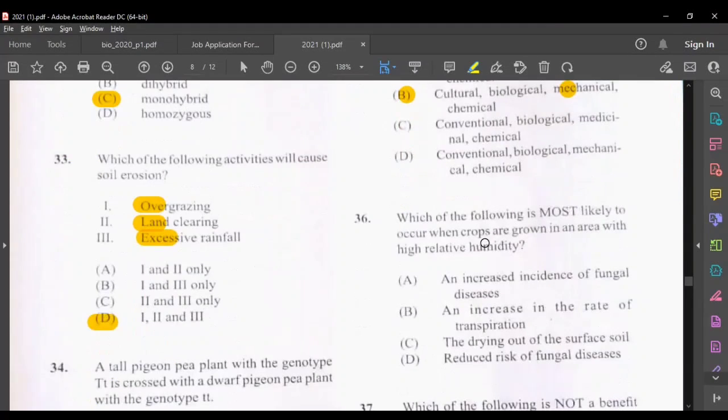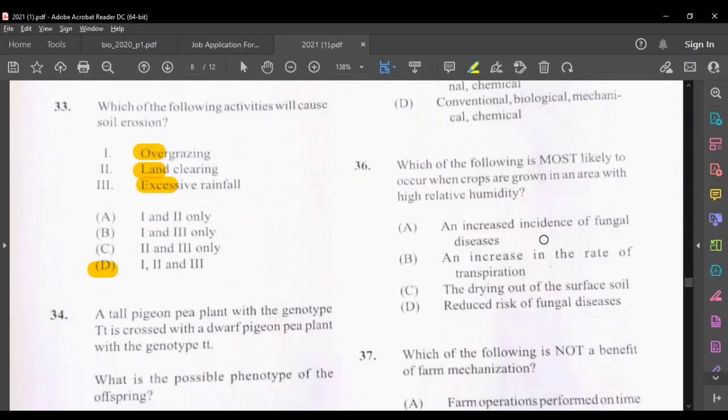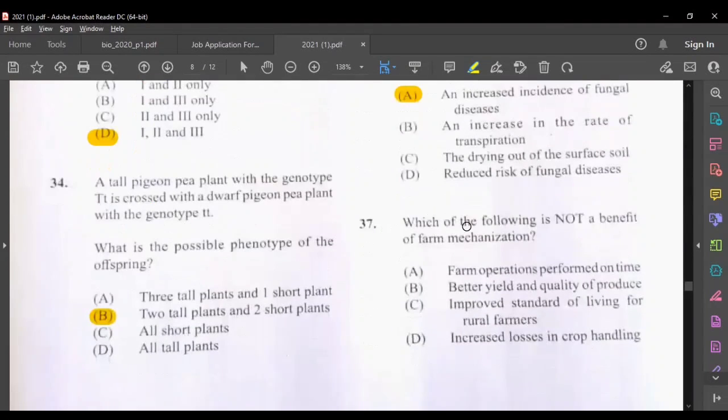Which of the following is most likely to occur when crops are grown in an area with high relative humidity? Increased incidence of fungal disease. Which of the following is not a benefit of farm mechanization? Farm operations are performed on time, that's a benefit. Better yield and quality of produce, that's a benefit. Improved standard of living for rural farmers, all of those are benefits. Increased losses in crop handling, that's not a benefit. So D would be the answer for 37.